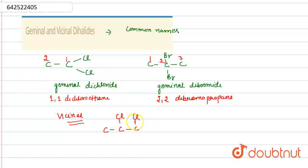We can also call them neighborhood halides. So their name will be Vicinal Dichloride.